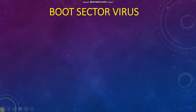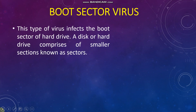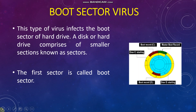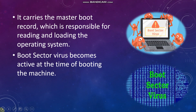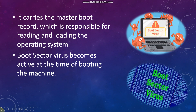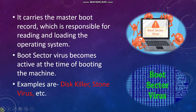The first type is boot sector virus. This type of virus infects the boot sector of a hard drive. A disk or a hard drive comprises of a smaller section known as sectors. The first sector is called the boot sector. It carries the master boot record, which is responsible for reading and loading the operating system. Boot sector virus becomes active at the time of booting the machine. Examples are Disk Killer and Stone viruses.